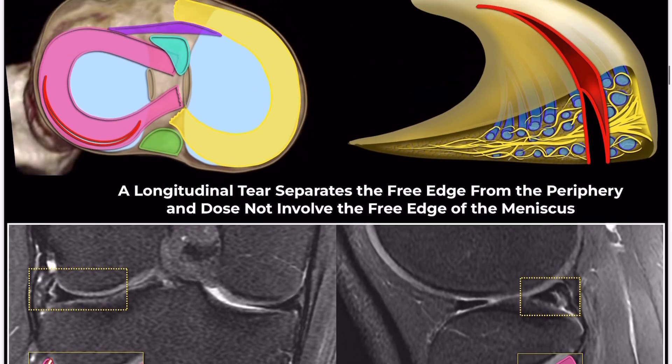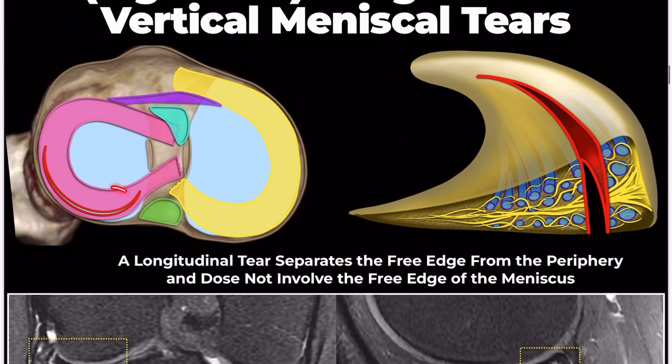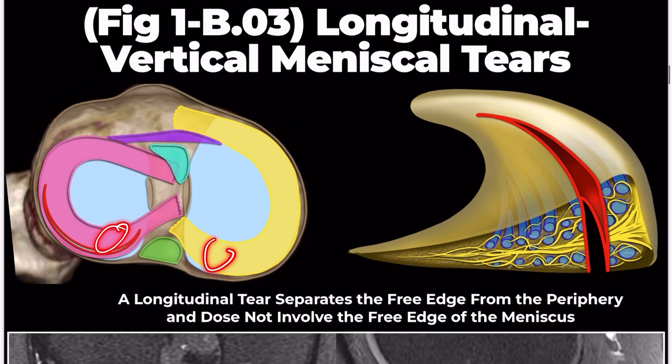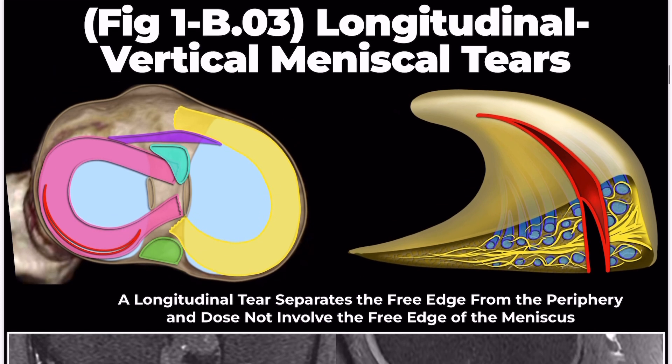Longitudinal tears are predominantly found in the posterior horn of both medial and lateral menisci. These types of tears usually occur in younger patients following significant knee trauma.